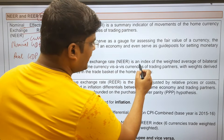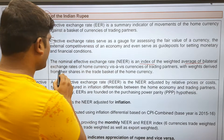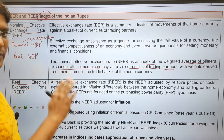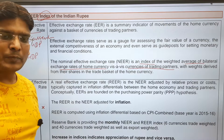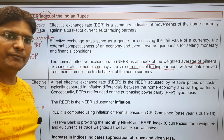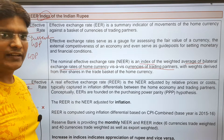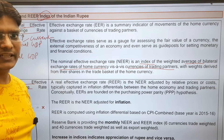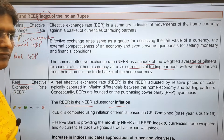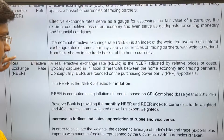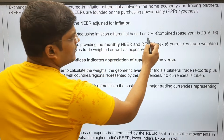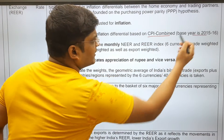The Nominal Effective Exchange Rate is an index of the weighted average of bilateral exchange rates of the home currency against the currencies of trading partners. The RBI provides monthly NEER and REER indices on the basis of 6-currency and 40-currency baskets. India's top 6 trading partners' trade is taken as a weight, and India's 40 major trading partners' trade is taken as a weight. REER is NEER adjusted for inflation, using the Consumer Price Index combined, with a base year of 2015-16.